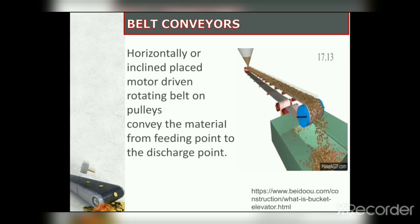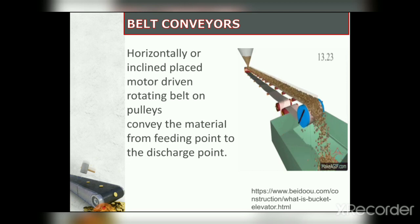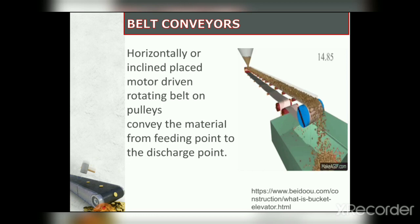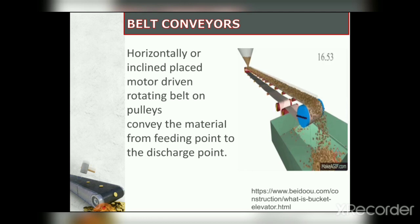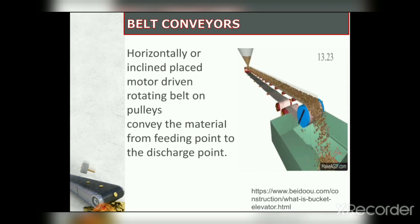In a belt conveyor, it consists of a core or carcass, where each layer is imprisoned and bonded with rubber. The carcass is then covered with a thin layer of rubber that binds the plies together. Both ends of the belt are joined so that the belt can revolve continuously. The belt may run horizontally or slightly inclined from the feed point. If the belt is too thin for its width, it will sag between the idlers.